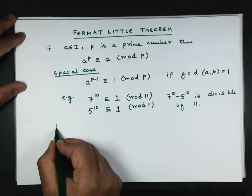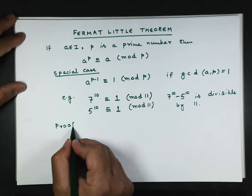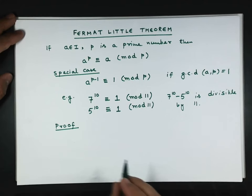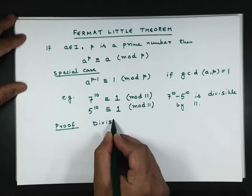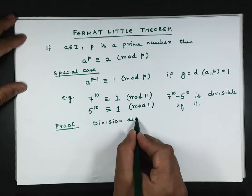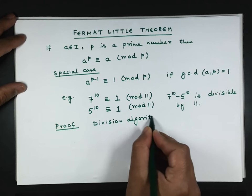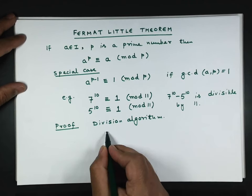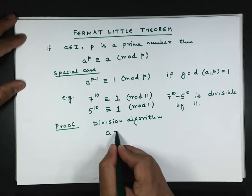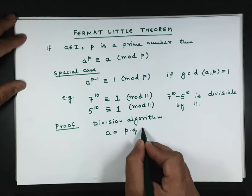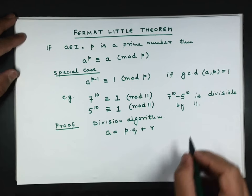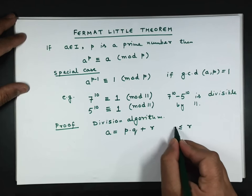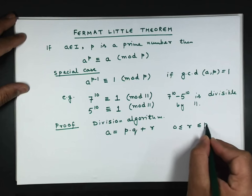Now for the proof, using the division algorithm, we know that a when divided by p gives quotient q and remainder r, where r can be 0 to p-1.